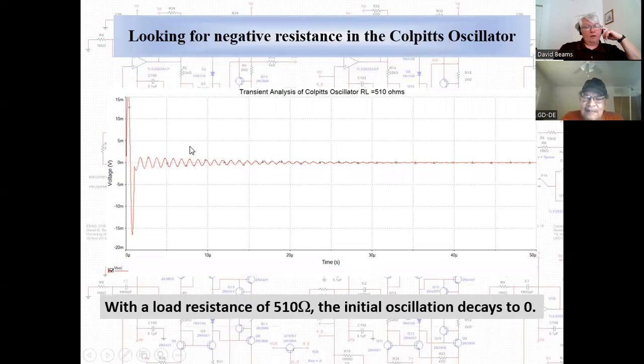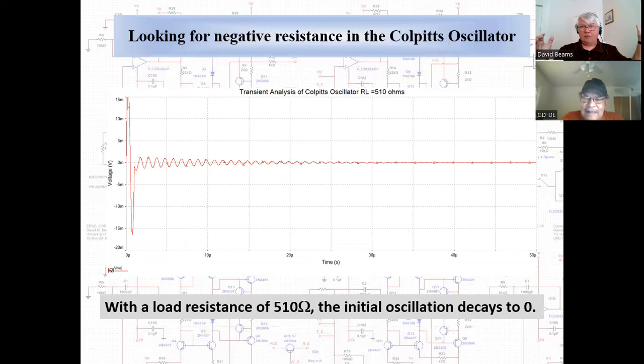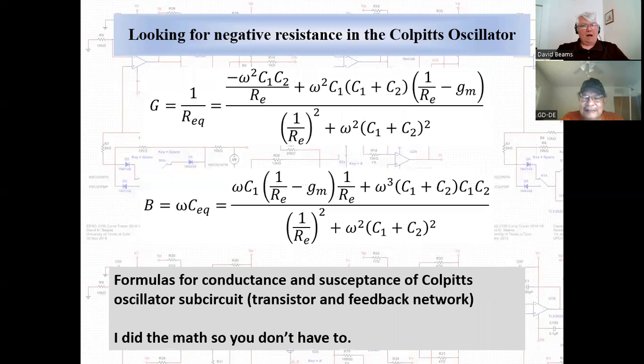With 510 ohms in the simulation, you see an exponentially decaying output from the kickstart source. So the negative conductance criterion predicted that with a load resistance of 554 ohms we're just on the edge of being able to oscillate — and that's what the simulation confirms. We look for the negative resistance to tell us the oscillation condition.